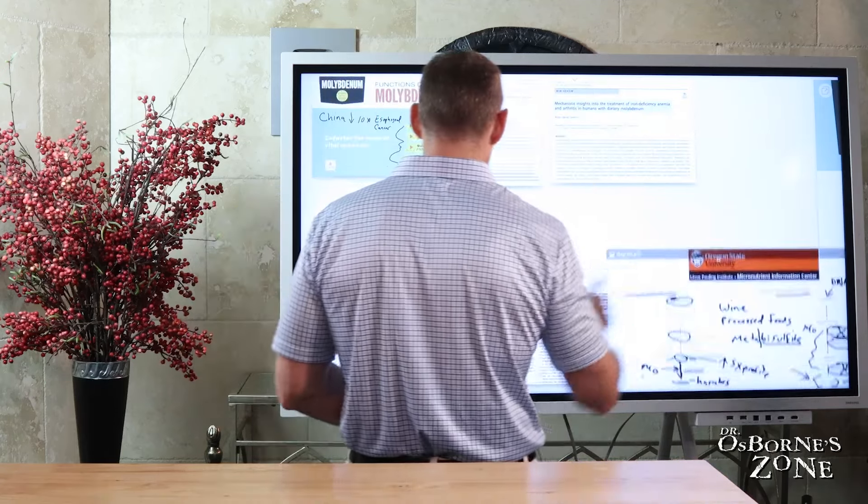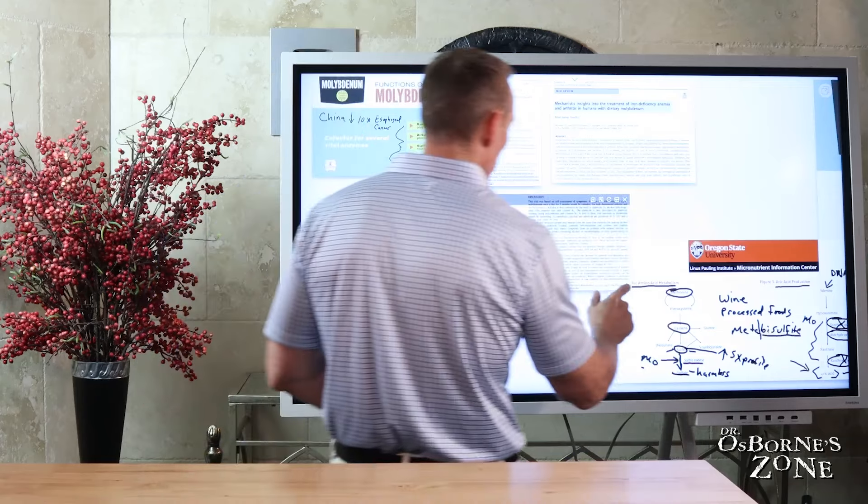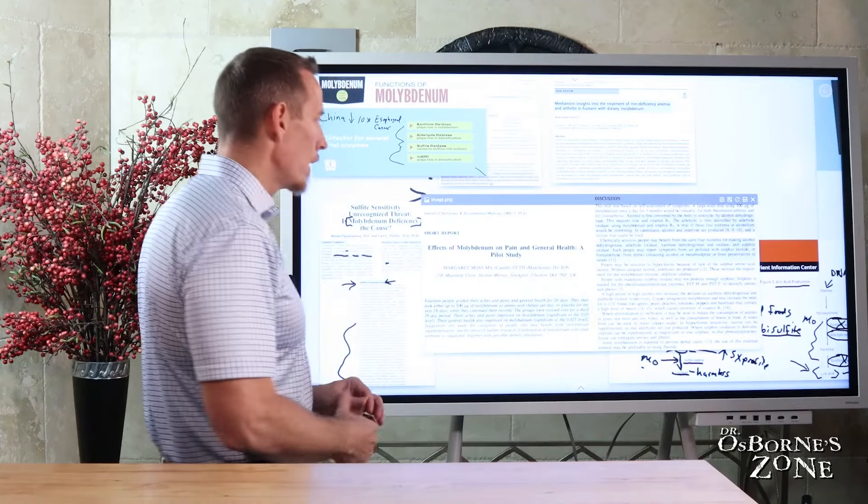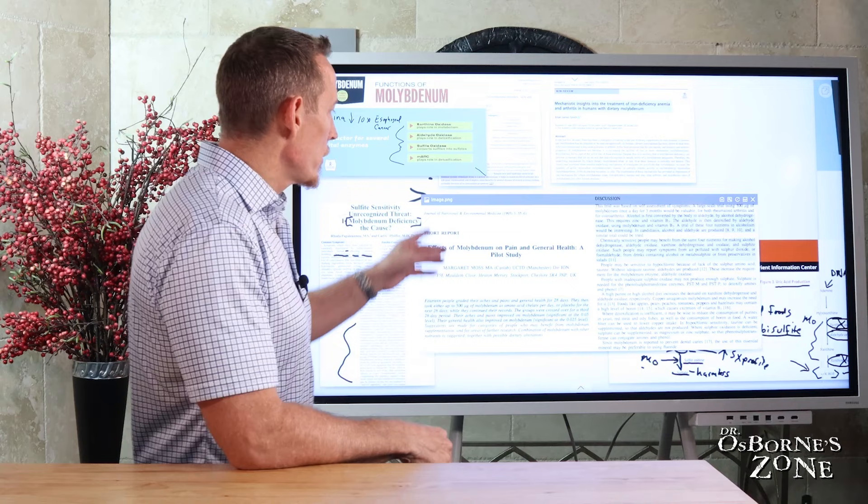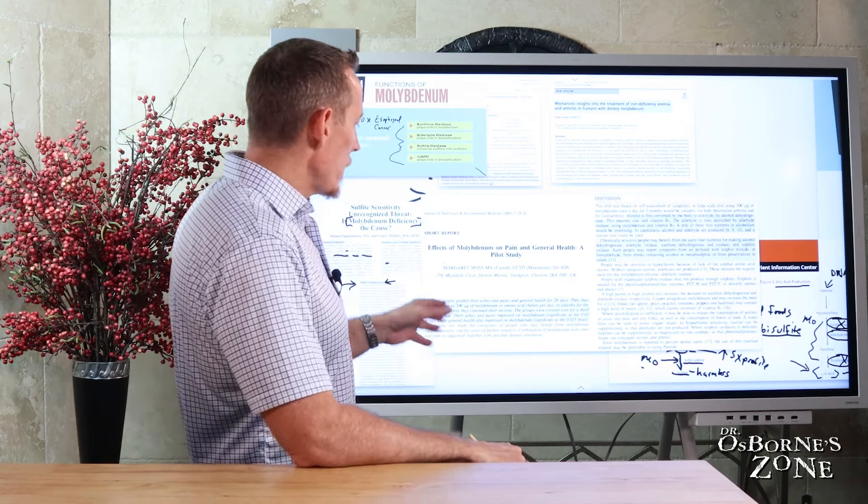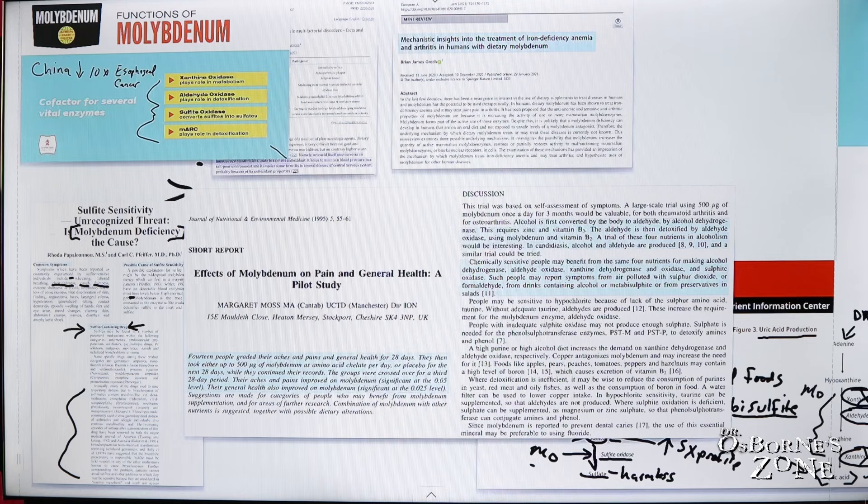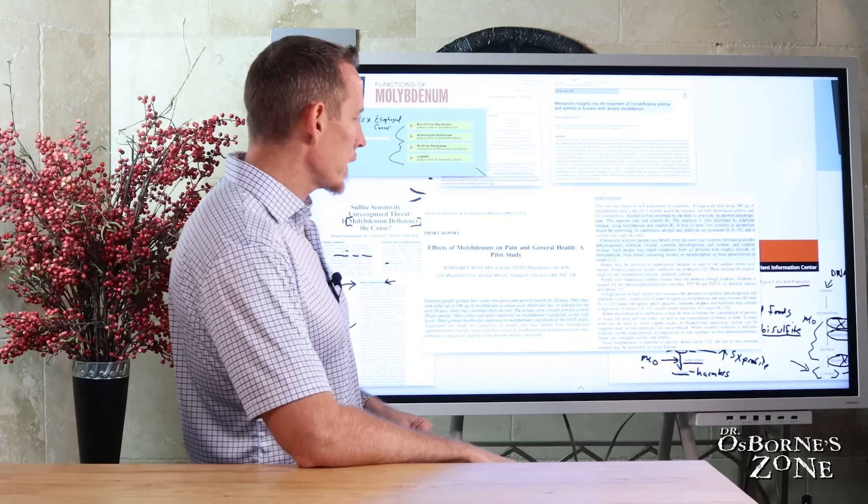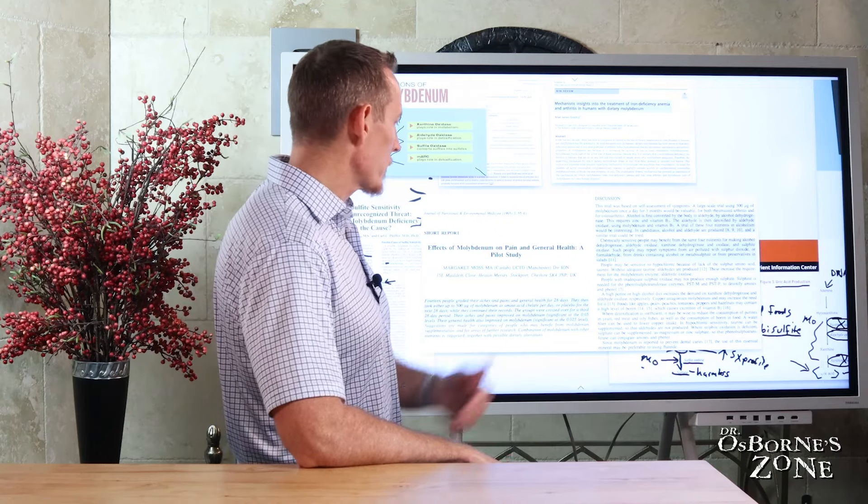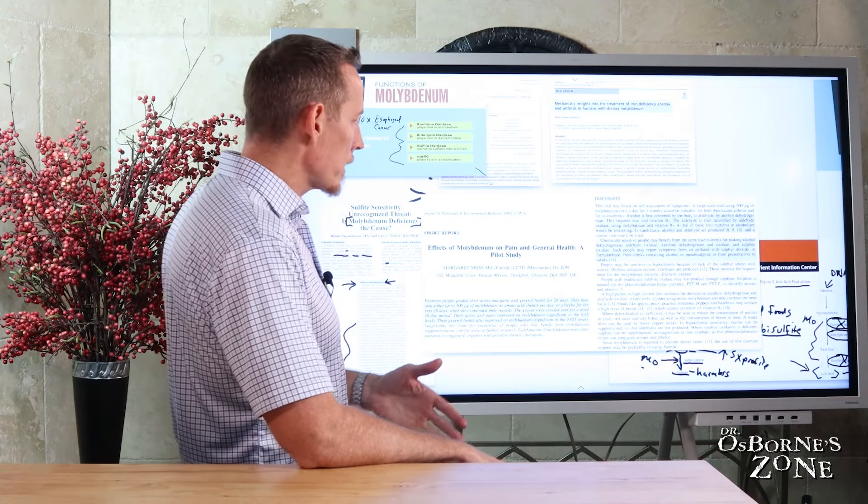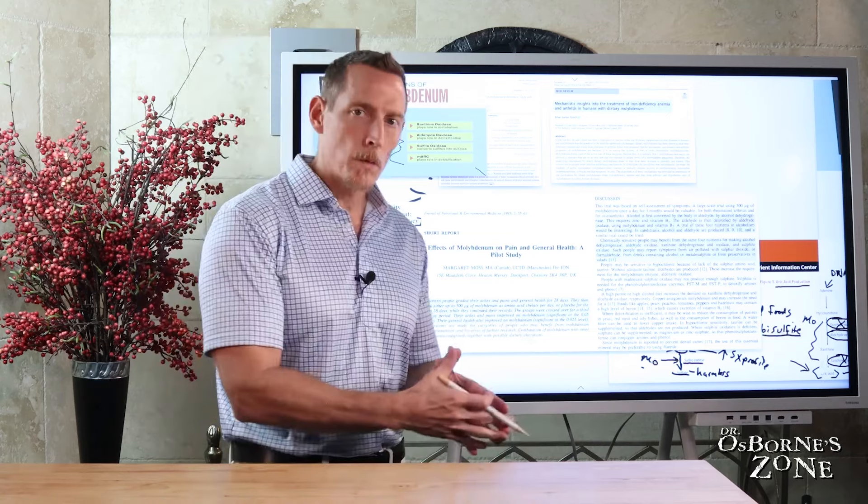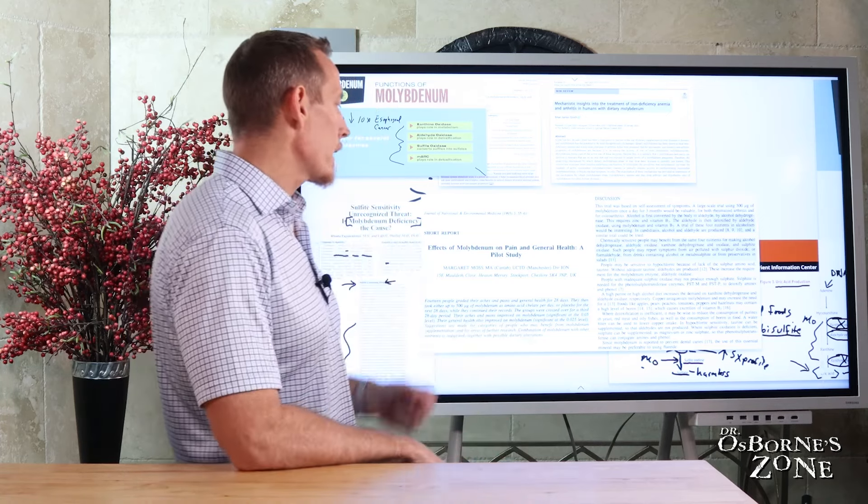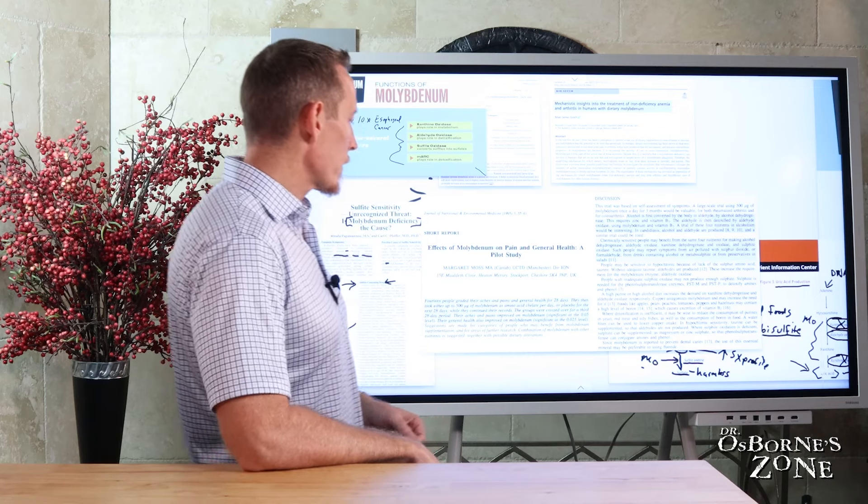Now, let's look at some of the other mechanistic research around this. So this was a really interesting study that was published a number of years ago, published in the Journal of Nutrition and Environmental Medicine, and it was a small-scale study, but they took 14 people and they graded their aches and pains in general health for 28 days, then they supplemented with either up to 500 micrograms of molybdenum as an amino acid chelate per day or a placebo for the next 28 days. So they monitored them for 28 days, then they supplemented them with either molybdenum or with a placebo for 28 days, and then they had a washout period of 28 days after the fact.